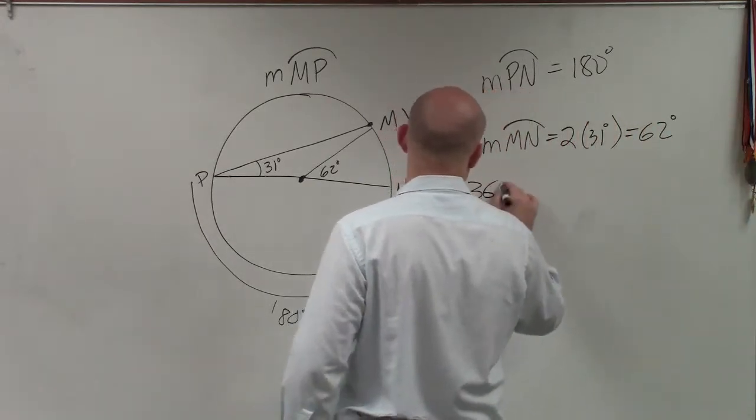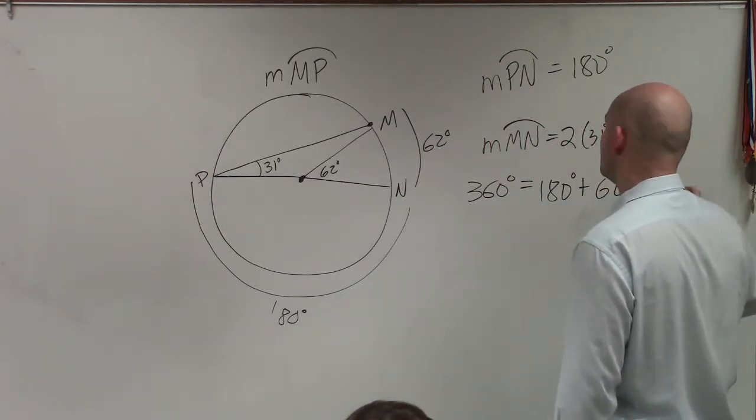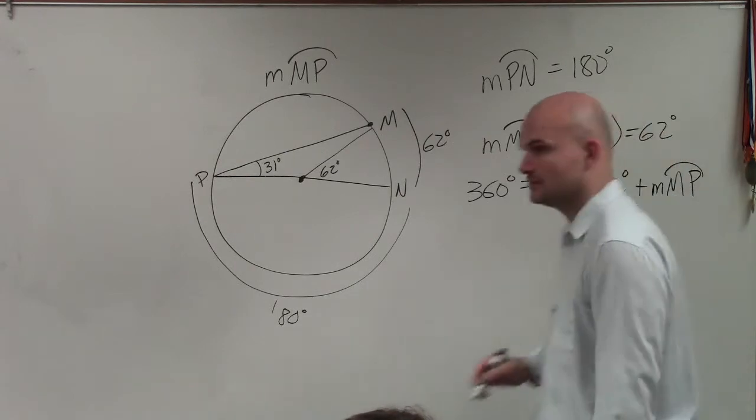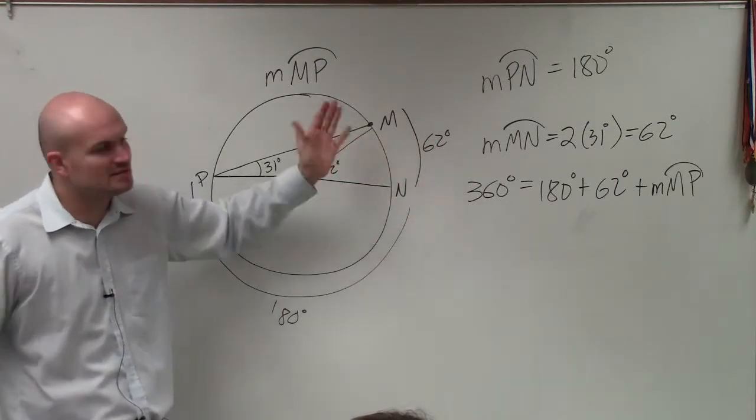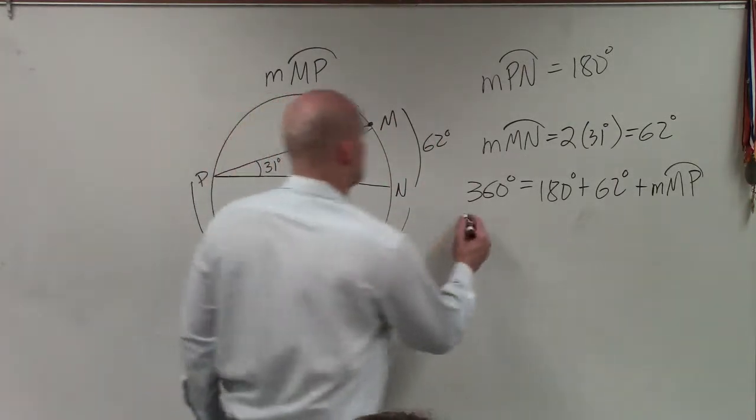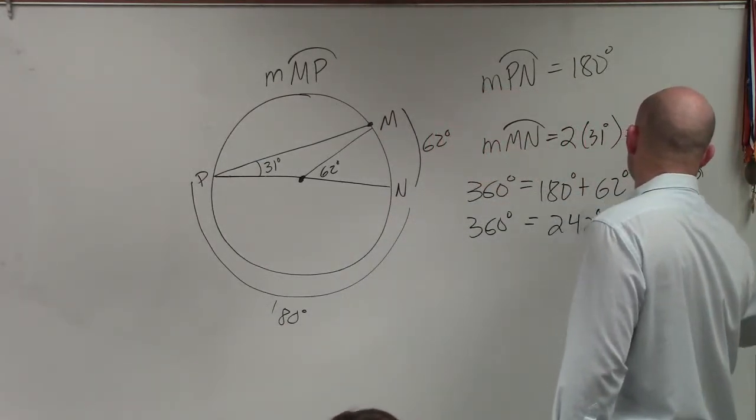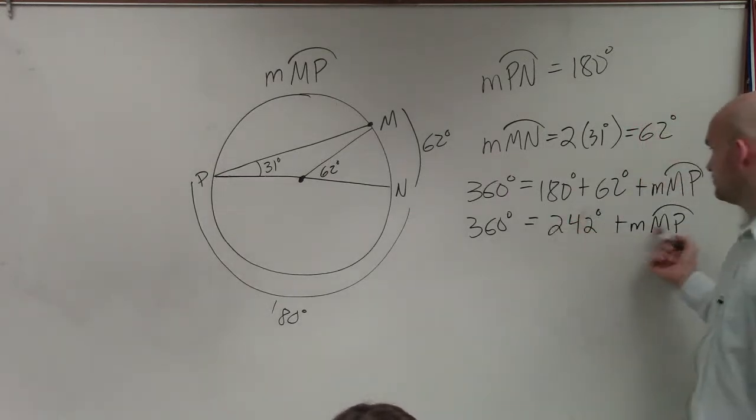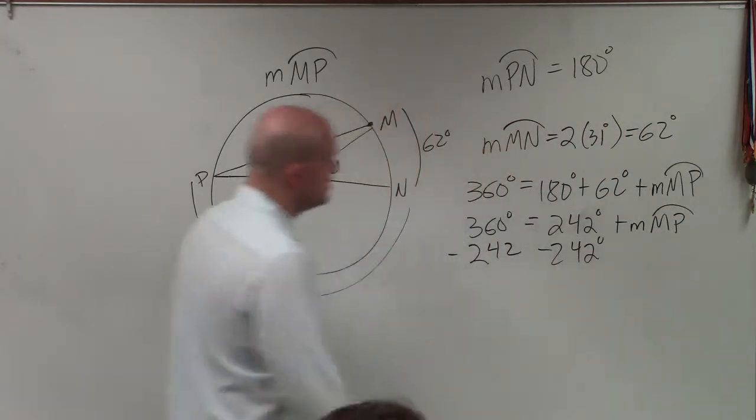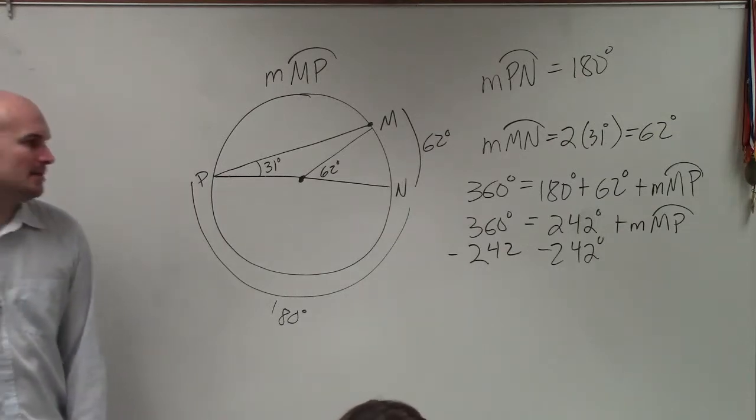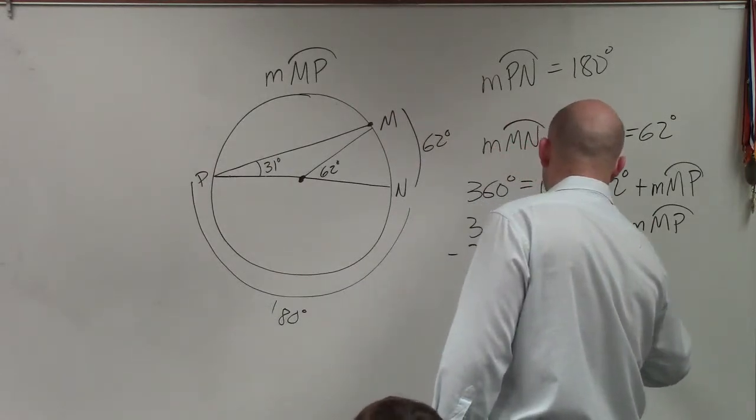So now I can just write 360 degrees equals 180 degrees plus 62 degrees plus the measure of arc MP. And that's what we're trying to solve, is the measure of MP. If you want to use x, go ahead and use x. It's just a variable. So now I can add these up. So I have 360 equals 242 degrees plus the measure of arc MP. Then I just subtract. I just solve. So therefore, I get 118 equals the measure of arc MP.